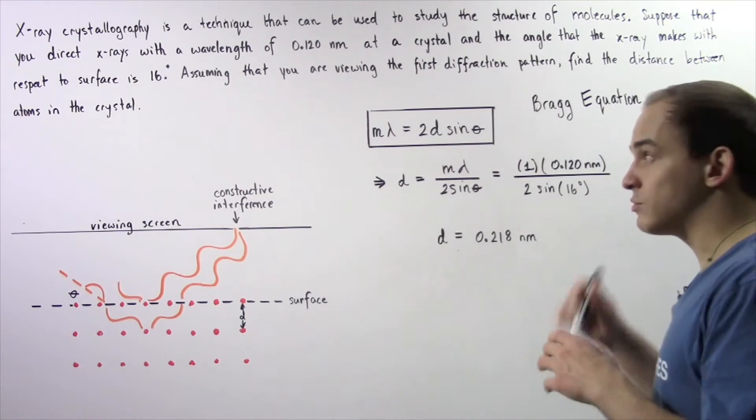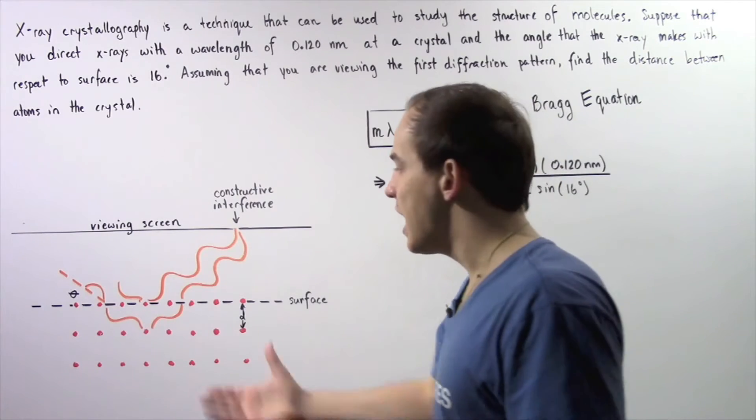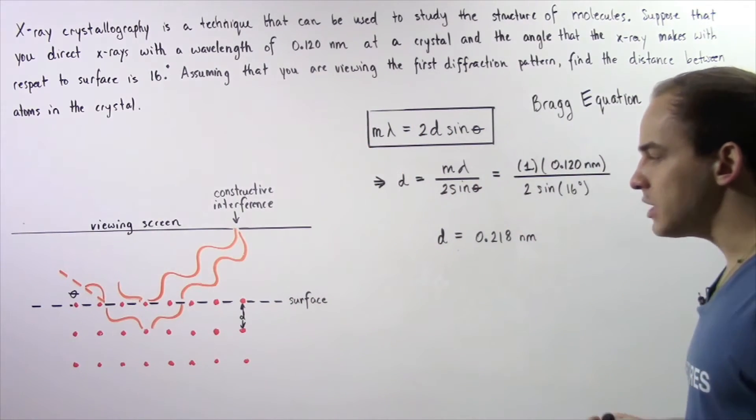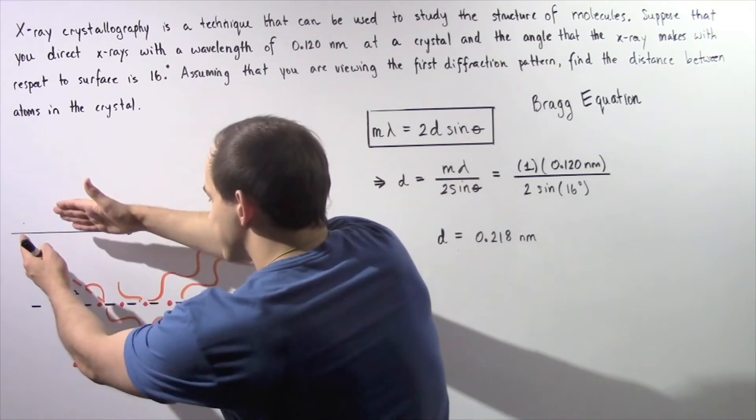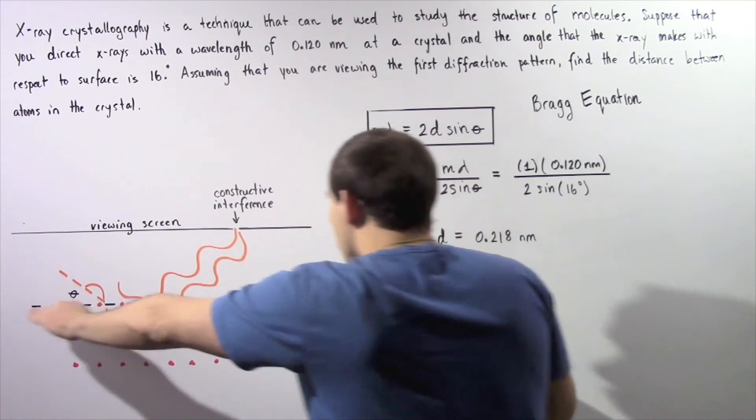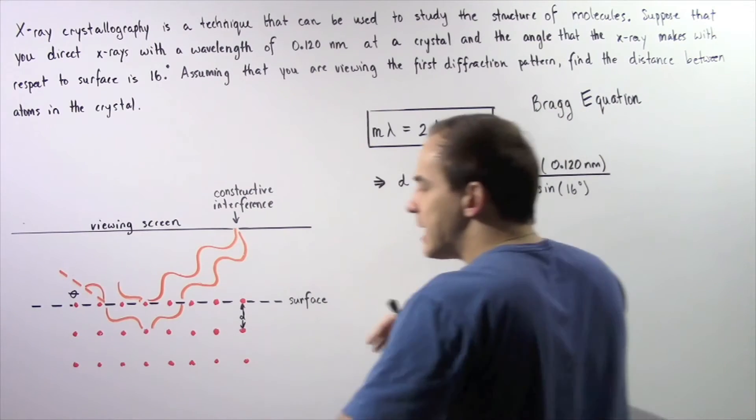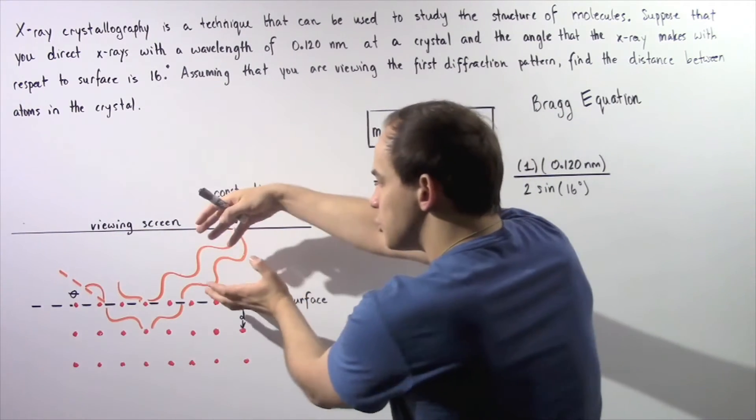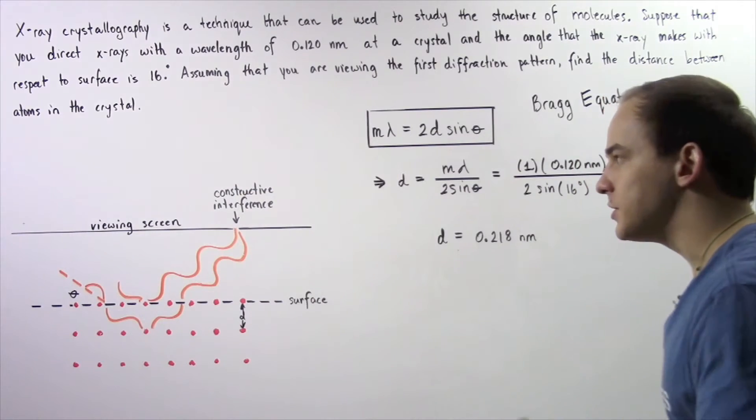The way we're going to do that is we're going to direct X-rays at the crystal lattice. X-rays are coming in at an angle of 16 degrees with respect to the surface. They are reflected and will eventually undergo interference.